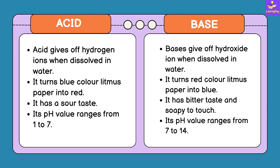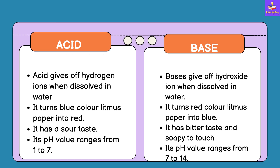Acid gives off hydrogen ions when dissolved in water, whereas bases give off hydroxide ions when dissolved in water. Acids turn blue colour litmus paper into red and bases turn red colour litmus paper into blue. Acids have a sour taste and bases have a bitter taste and they are soapy to touch. The pH value of acids ranges from 1 to 7 and the pH value of bases ranges from 7 to 14.